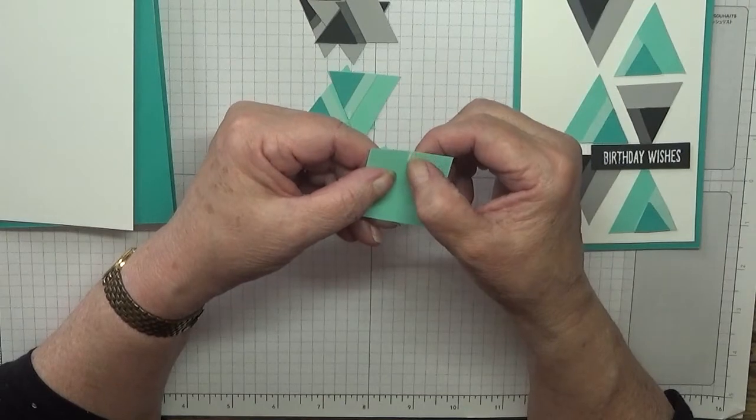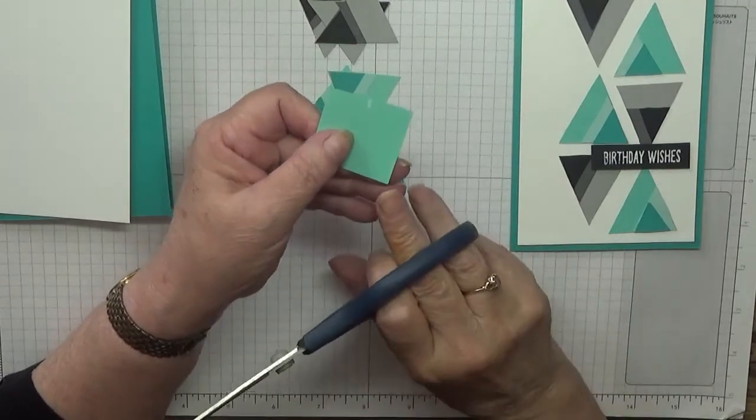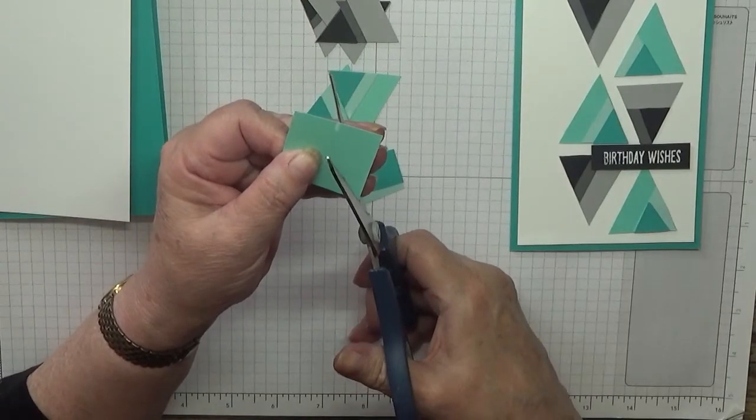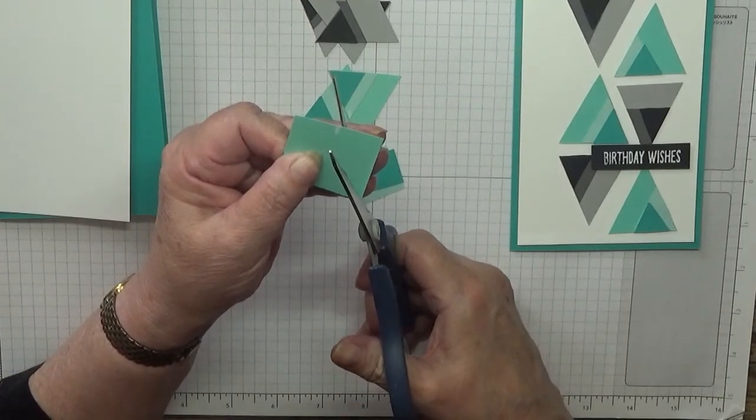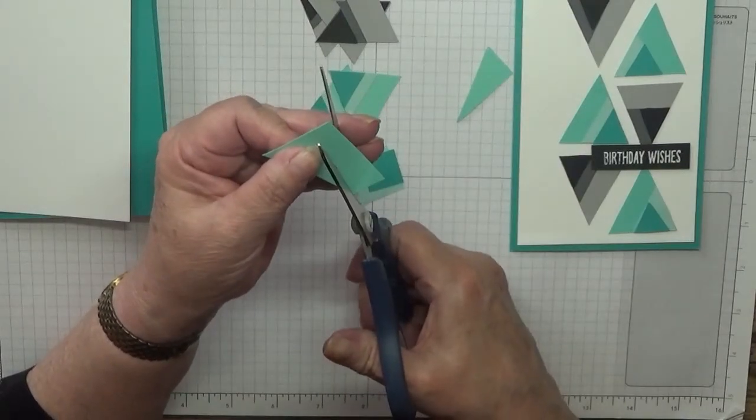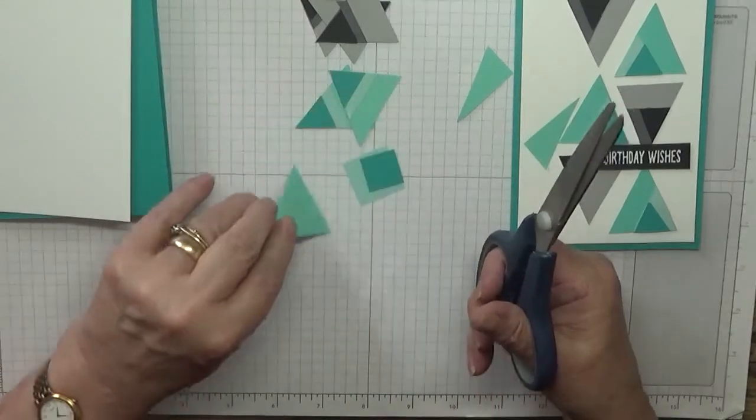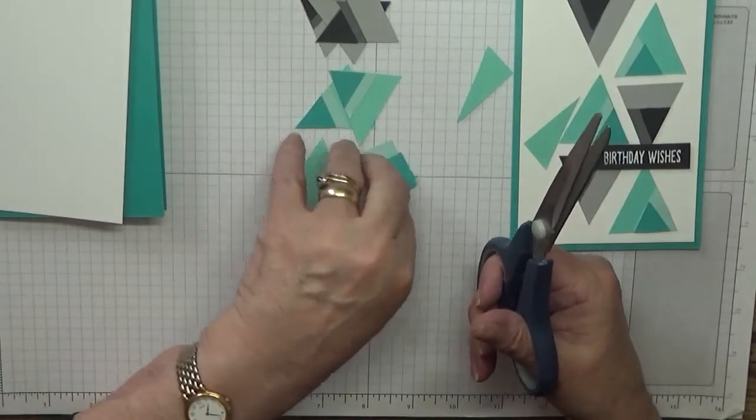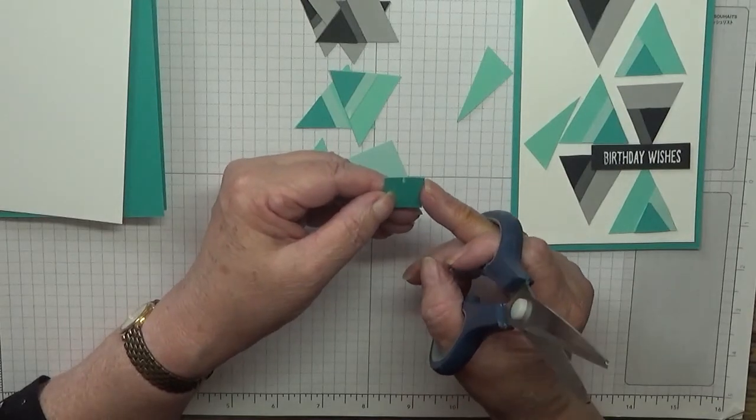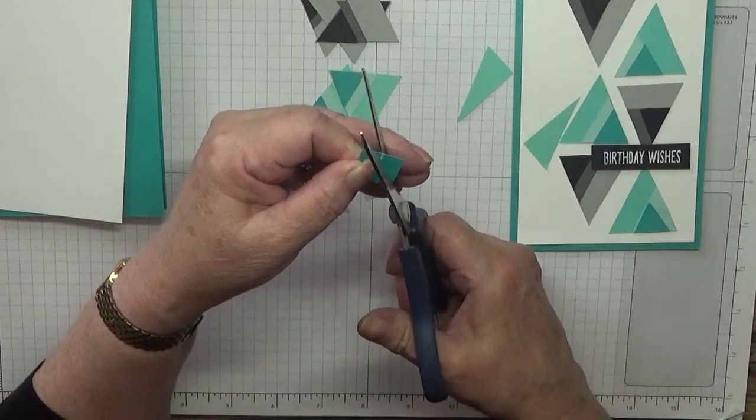Three quarters of an inch there and what we're going to do with my scissors, we're going to cut from this point to the middle of that one and we're going to do the same the other side. So there's our first triangle and they've all got the same.